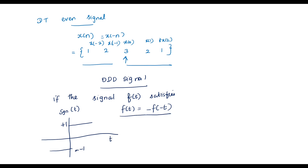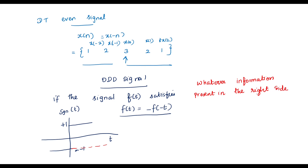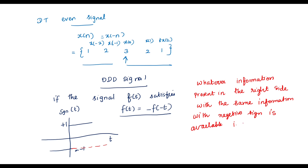The relation is f of t equal to minus f of minus t. Consider this waveform on the positive side — the negative half is the mirror with a negative sign. Whatever information is present in the right side, the same information with negative sign is available in the left side. So this is the signum of t.